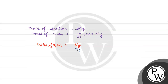The molar mass of H2SO4 is 98 gram per mole. Here is how: 2 hydrogen atoms give 2 gram per mole, 1 sulfur atom gives 32 gram per mole, and 4 oxygen atoms give 16 × 4 = 64 gram per mole. So the total molar mass is 98 gram per mole.